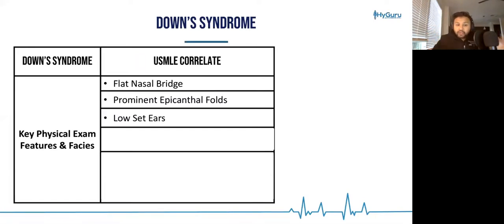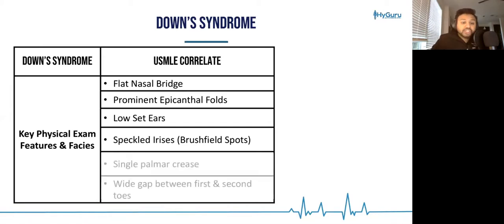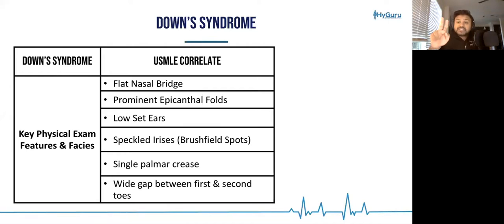They're going to have low set ears. They're also going to have abnormalities in the colored portion of the eye, and we call those Brushfield spots. Patients with trisomy 21 are going to have a single palmar crease, and on their toes, the first and second digits may be very widely spaced.